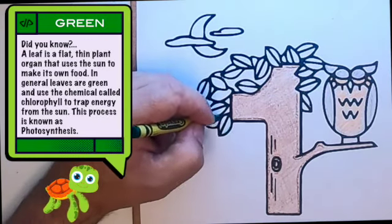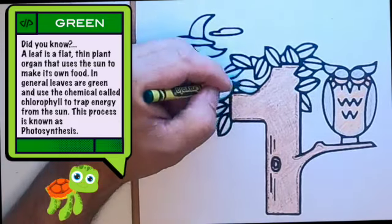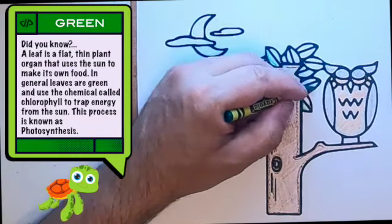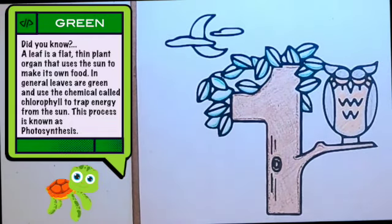A leaf is a flat, thin plant organ that uses the sun to make its own food. In general, leaves are green and use the chemical called chlorophyll to trap energy from the sun. This process is known as photosynthesis.